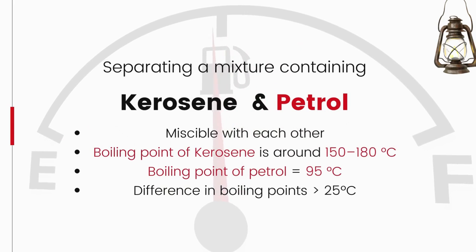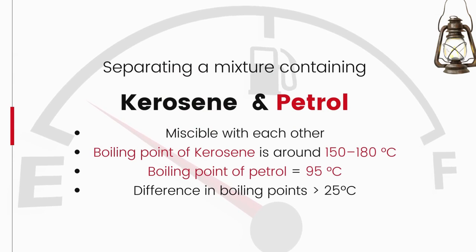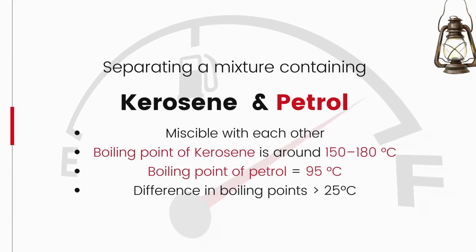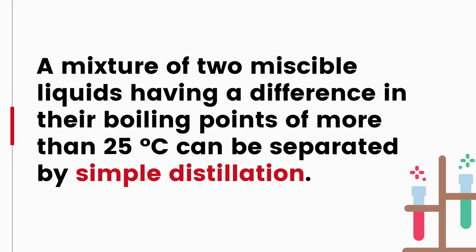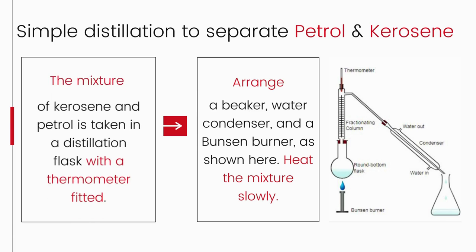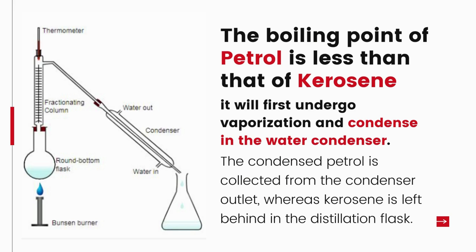How can we separate a mixture of kerosene and petrol? The difference in their boiling points is more than 25°C and they are miscible. A mixture of two miscible liquids with a boiling point difference of more than 25°C can be separated by simple distillation. The mixture is placed in a distillation flask with a thermometer; arrange a water condenser and Bunsen burner. Since petrol has a lower boiling point than kerosene, petrol vaporizes first, condenses in the water condenser, and is collected from the condenser outlet; kerosene remains in the distillation flask.